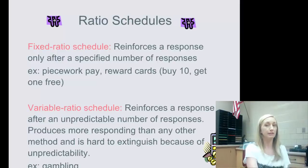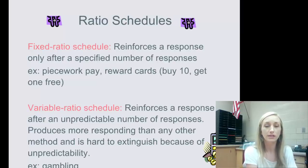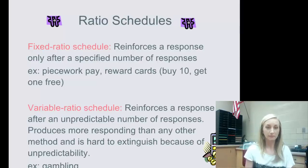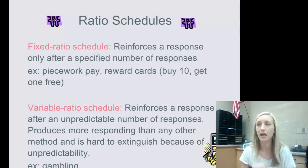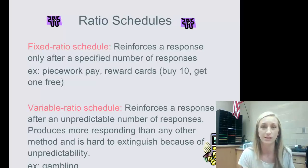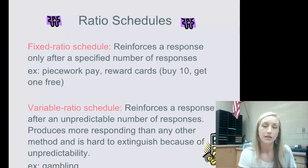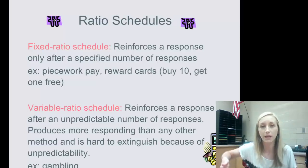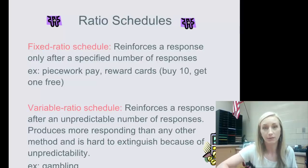Variable ratio reinforces a response after an unpredictable number of responses. This produces more responding than any other method and is hard to extinguish because of its unpredictability. Gambling is the key example — it's variable ratio because it's the number of times you gamble and you don't know when you'll be reinforced. Variable ratio is most resistant to extinction — make sure you star that in your notes.